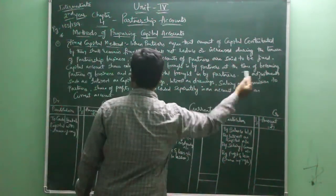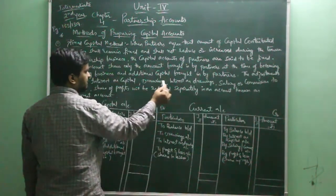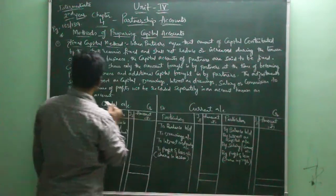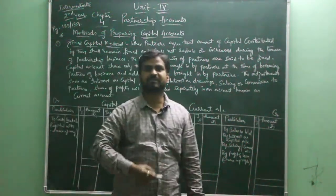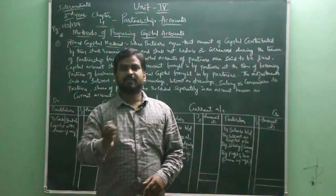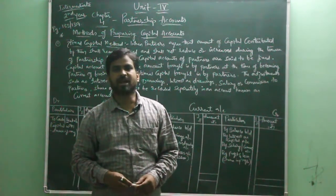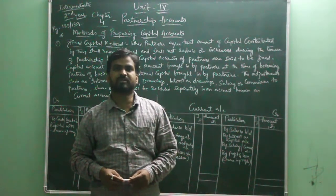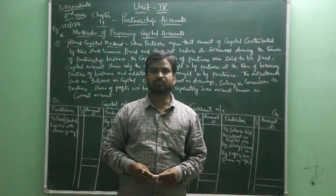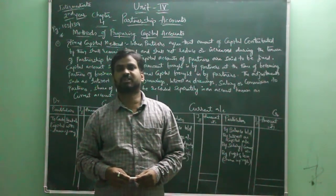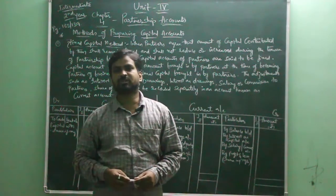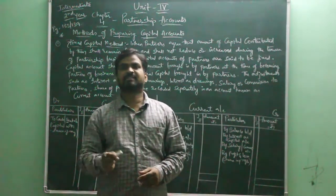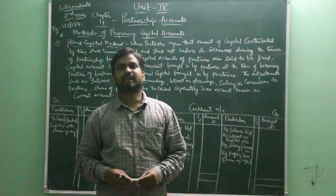Other adjustments such as interest on capital, drawings, interest on drawings, and salary or commission to partners will be recorded separately in an account known as the current account. Partners who invest in business are paid interest on capital. Partners can also withdraw some amount from the business for their personal use, which is called drawings, and they pay interest on drawings to the business. Partners are also entitled to receive salary and commission.